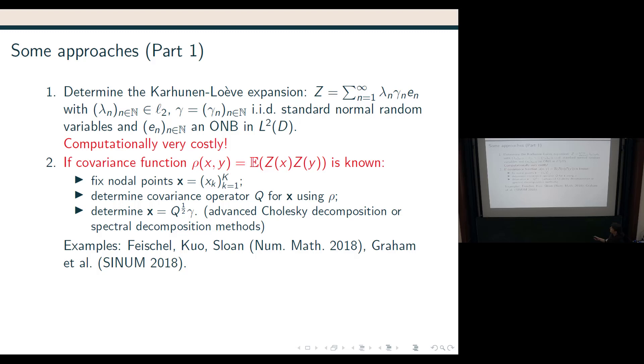Then, if you have the, if the covariance function is known, remember it's not stationary, but it could still be known, then an approach that has been developed in detail quite recently by, well actually, so Wessel, Kuo, and Sloan are the authors of this article and Graham et al., actually the et al. also contains, I think, Kuo and Sloan and some others. What do they do? Well, like I said, you have a covariance function, so you pick some nodal points, you determine the covariance operator Q for these nodal points. Then all you need to do is, you need to take the square root of this Q and that's of course where the work is, and that's what these articles are about, how to take the square root.